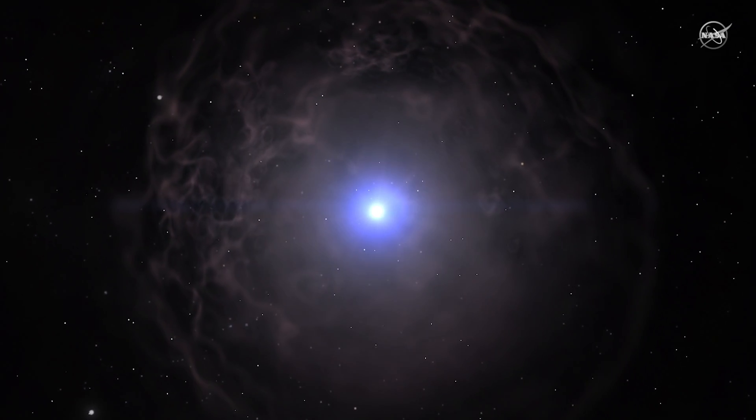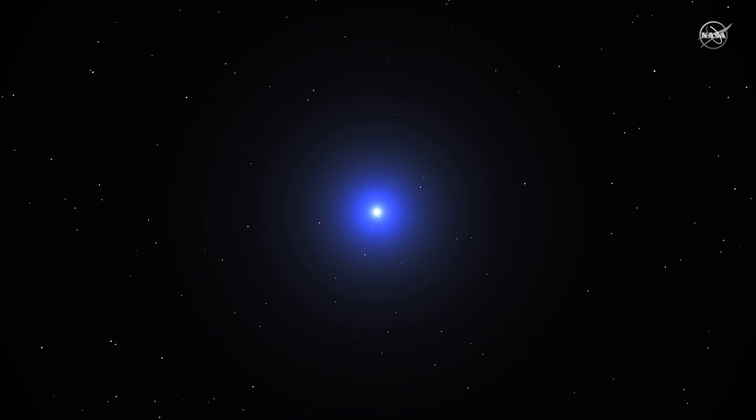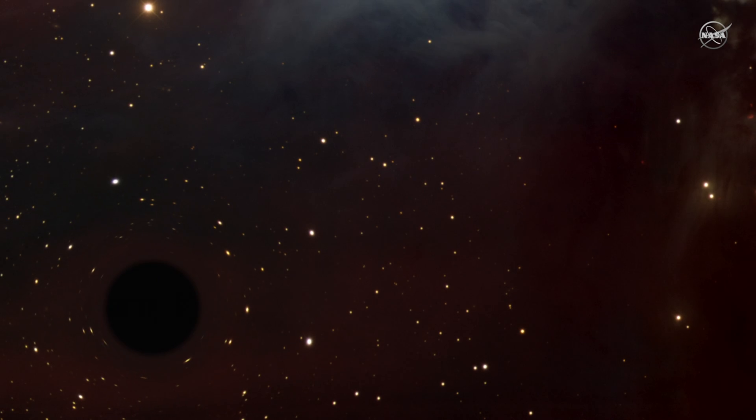What's left behind depends on the star's original mass. A star roughly 10 to 20 times our Sun leaves behind a neutron star. A more massive star becomes a black hole.